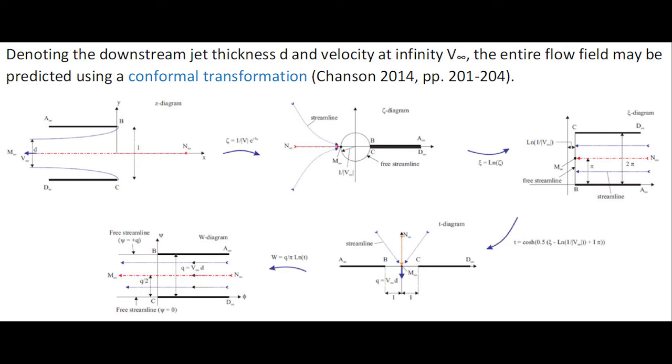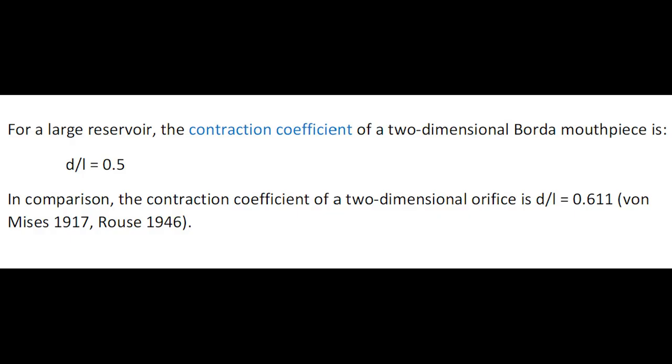Denoting the jet thickness d and velocity at infinity v-infinite, the internal flow field may be predicted using a conformal transformation.